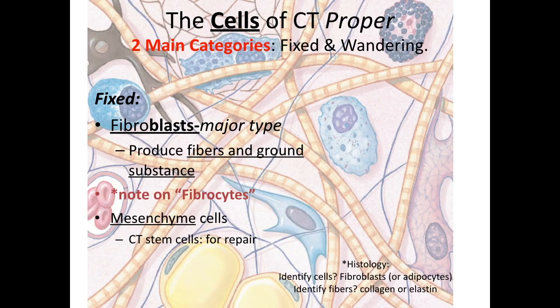That's the matrix — the ground substance and the fibers. Besides the water in the ground substance, those other components are all made by the major cells of connective tissue: fibroblasts. Anytime you're doing histology and looking at connective tissue proper and I ask you to identify a cell, that is a fibroblast — with the possible exceptions of some obvious white blood cells. There's also a population of mesenchyme cells, those connective tissue stem cells, which can differentiate into any type of connective tissue cell like a fibroblast when repair is needed.